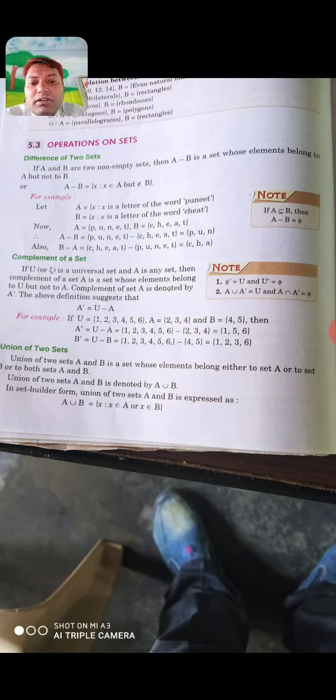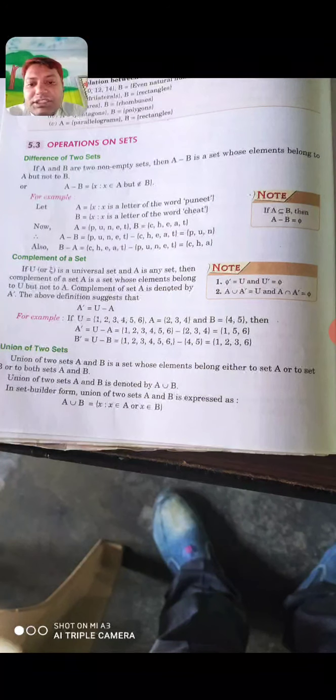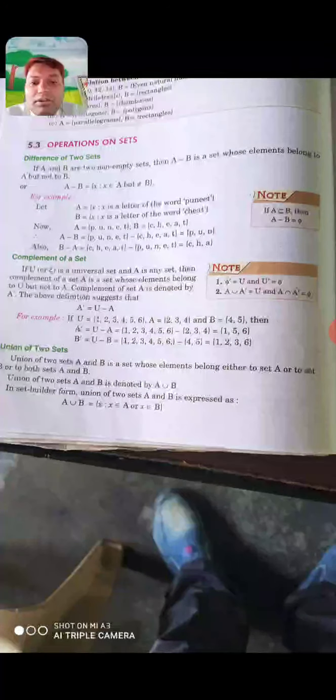B minus A is called C, H, A. C, H, A is present only in set B not in set A.